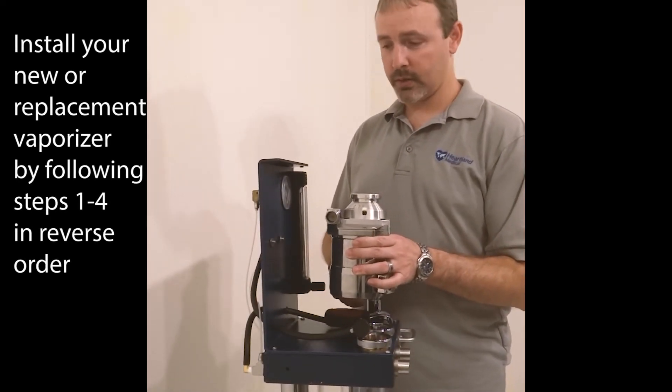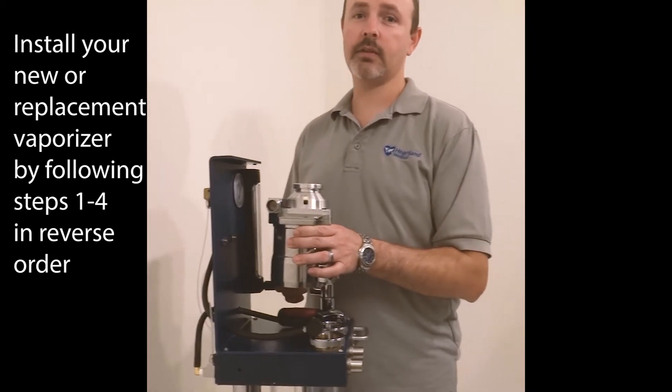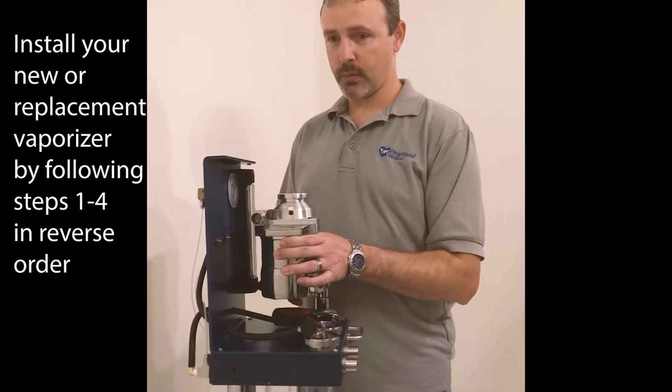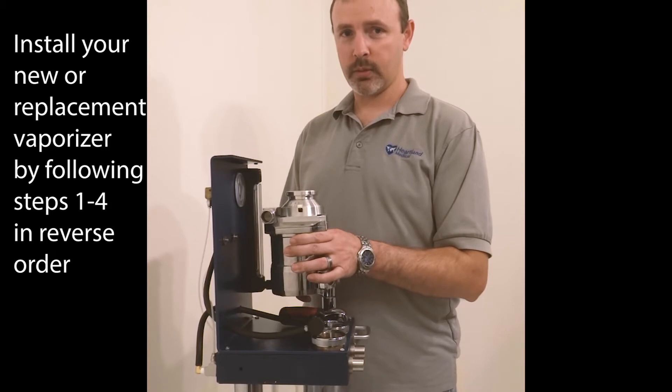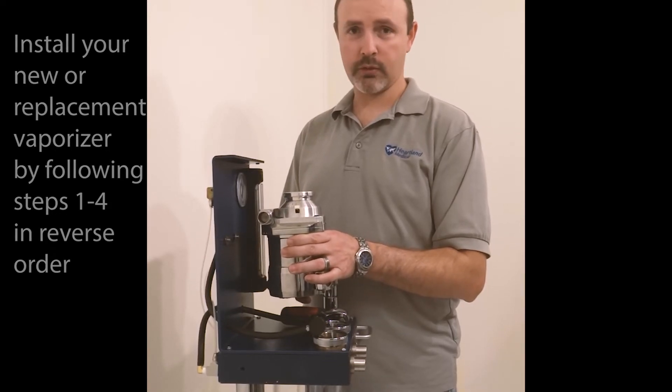When you're ready to install the new vaporizer, just do the reverse process of taking it apart. Install the vaporizer, put the back cover on, put the mayo tray on, and put all the screws back in.